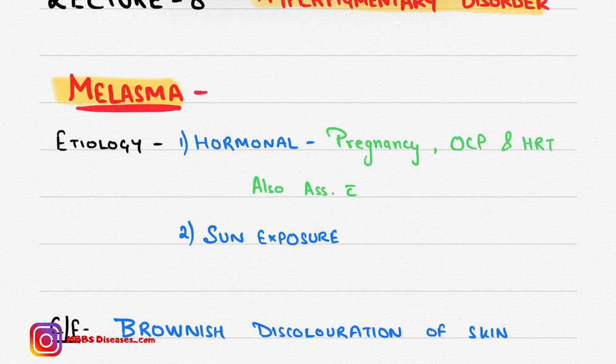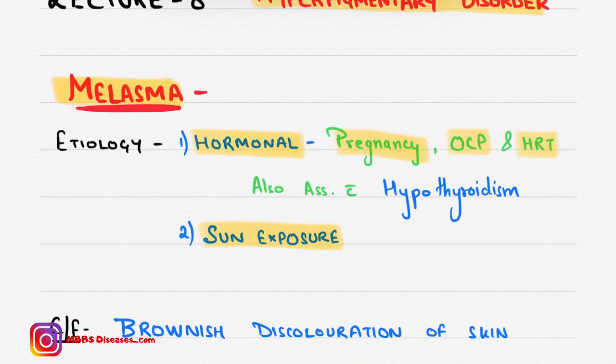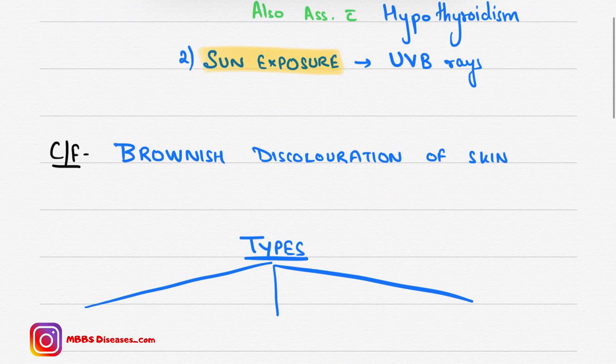What is the etiology of melasma? It can be hormonal or sun exposure. In hormonal causes, at the time of pregnancy and after taking OCP and HRT, estrogen causes melasma. It is also associated with hypothyroidism. The other cause is sun exposure, mainly UVB rays. Excessive UVB exposure causes melasma.